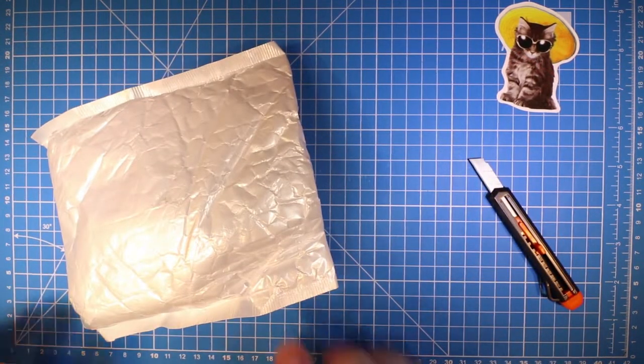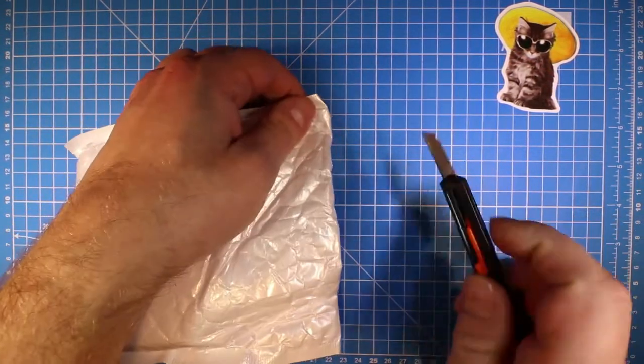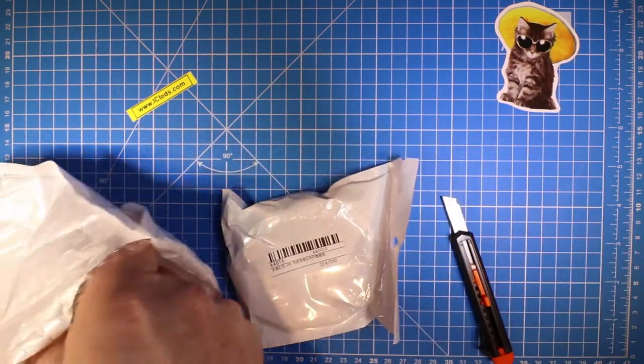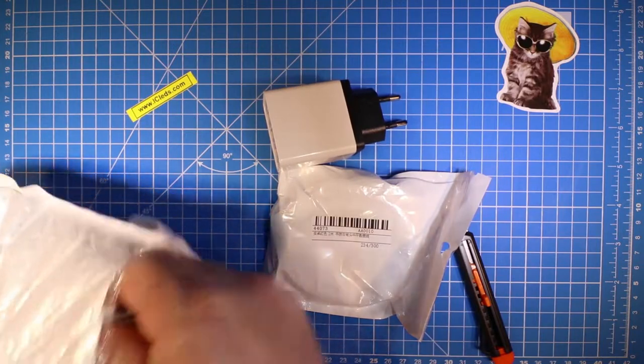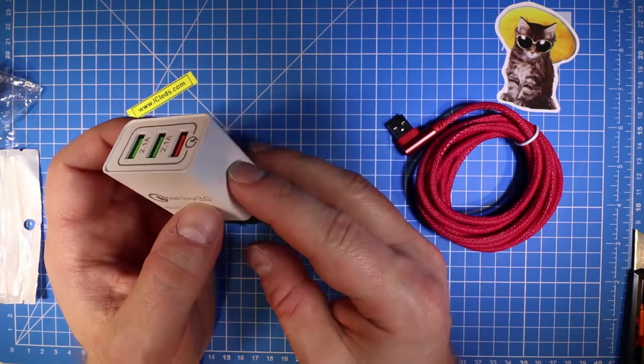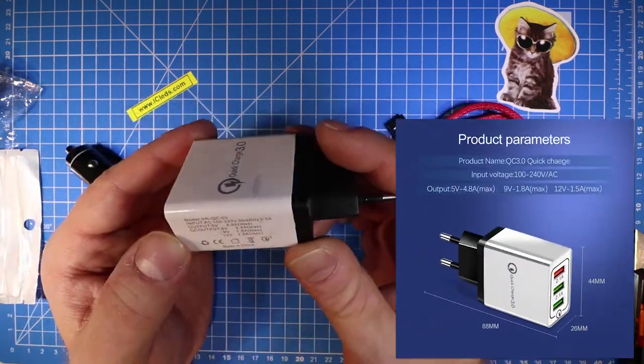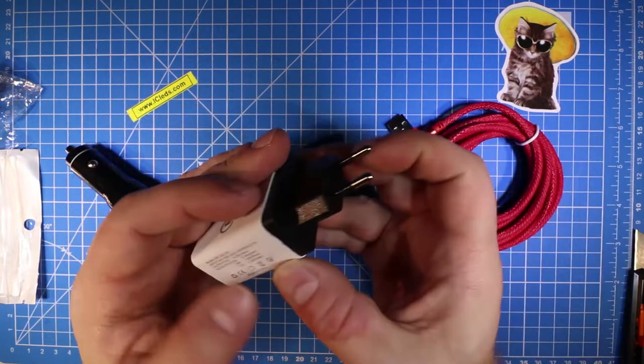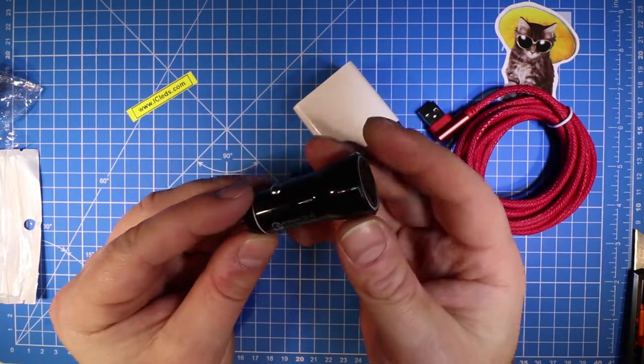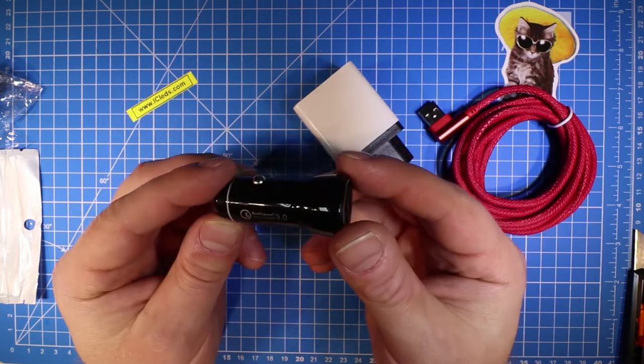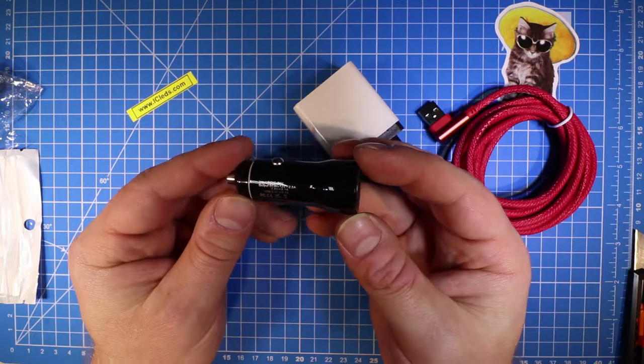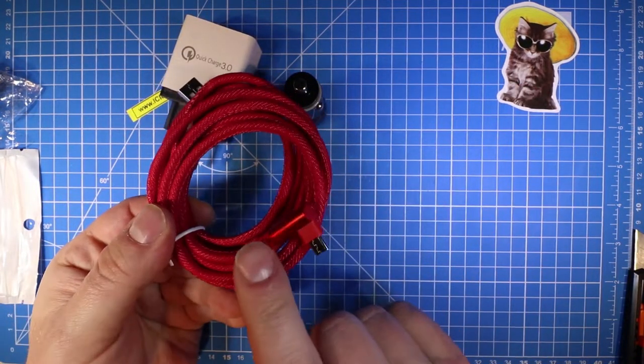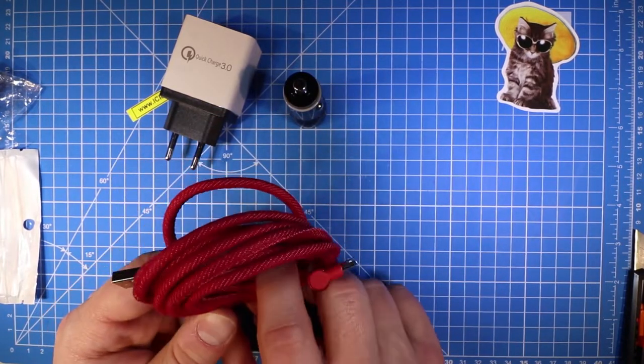Next bag from Aliexpress, it's a bit fluffy. This is a quick charge 3.0V from Olaf. These are actually nice cables, they do work very well.